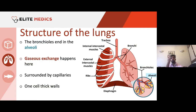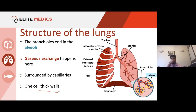Pretty much all gas exchange occurs at the alveoli. The alveoli are very well adapted — they're surrounded by capillaries, giving a good blood supply, and they have only one-cell-thick walls. If you're thinking of Fick's law of diffusion, one-cell-thick walls means a decreased width of the exchange surface, which increases the rate of diffusion.